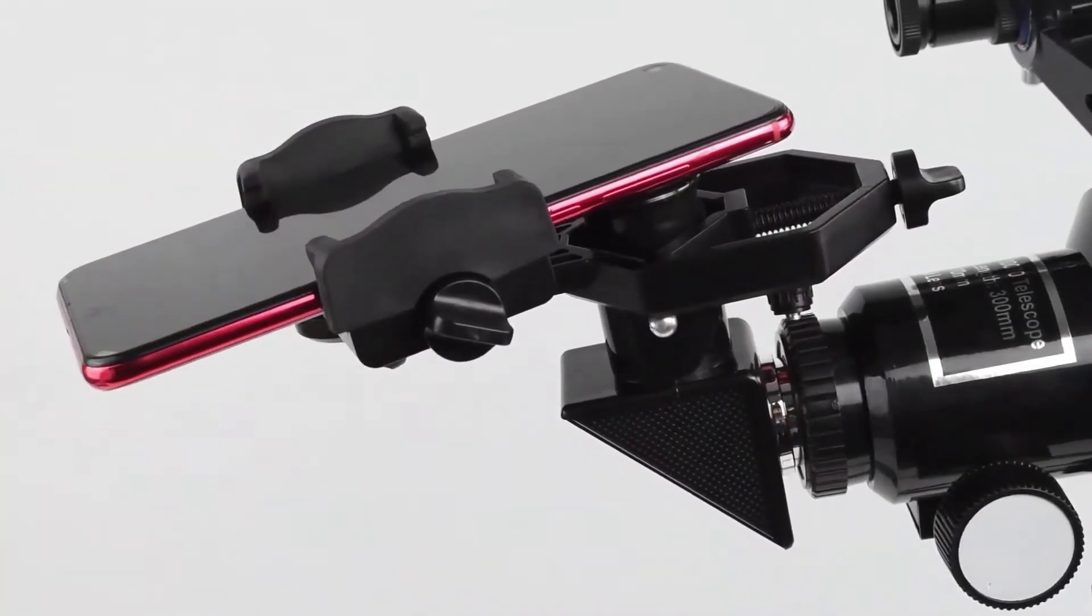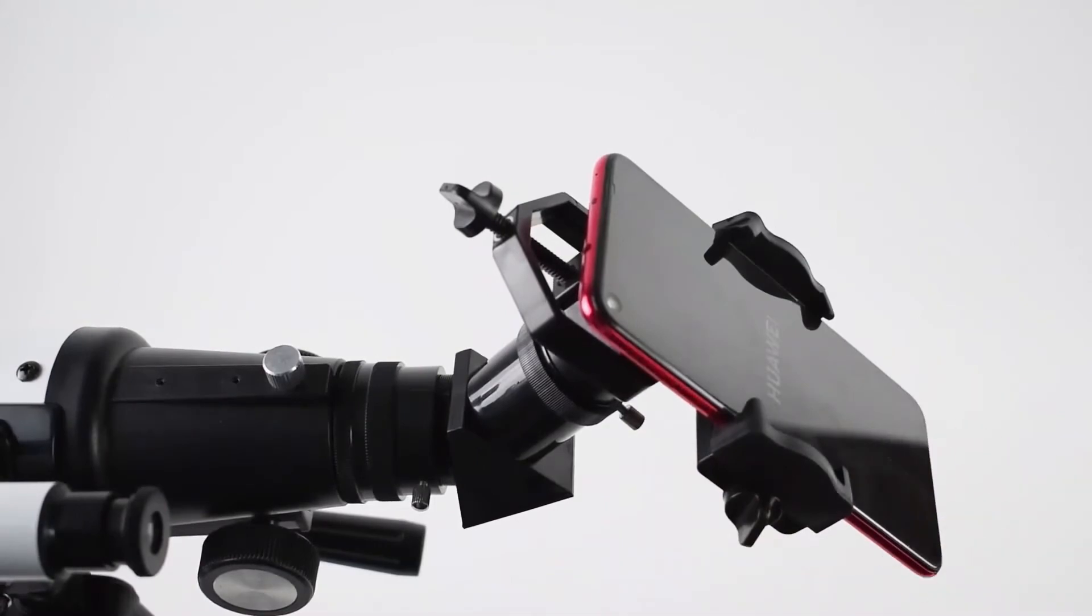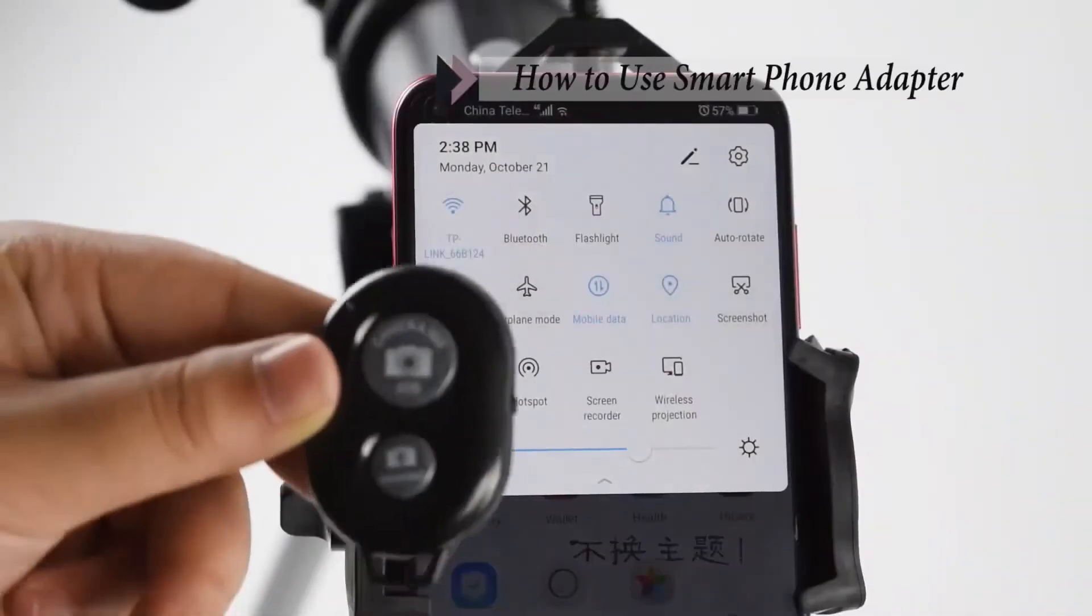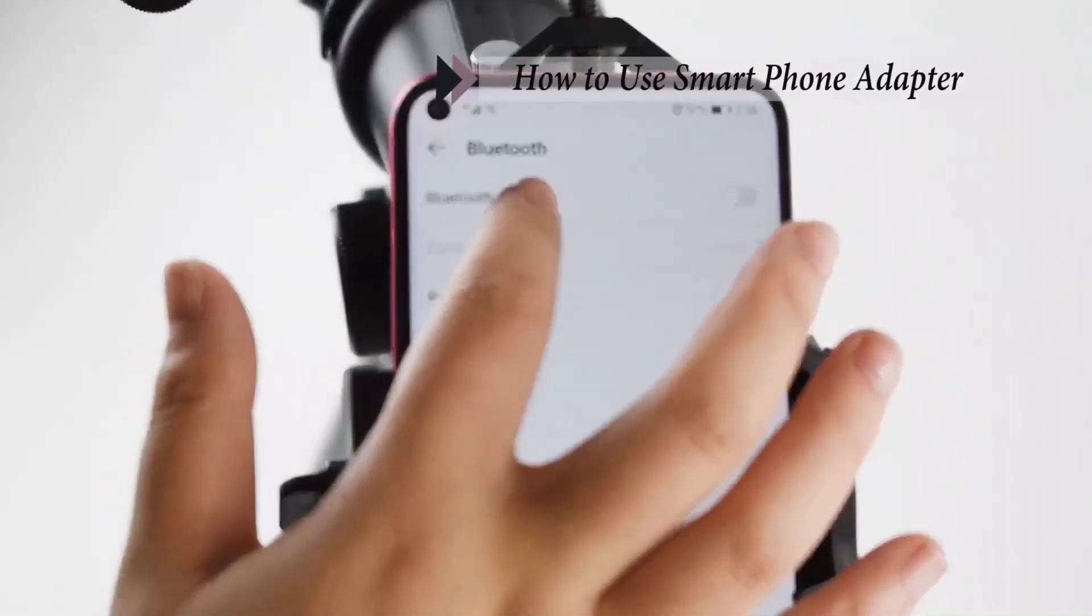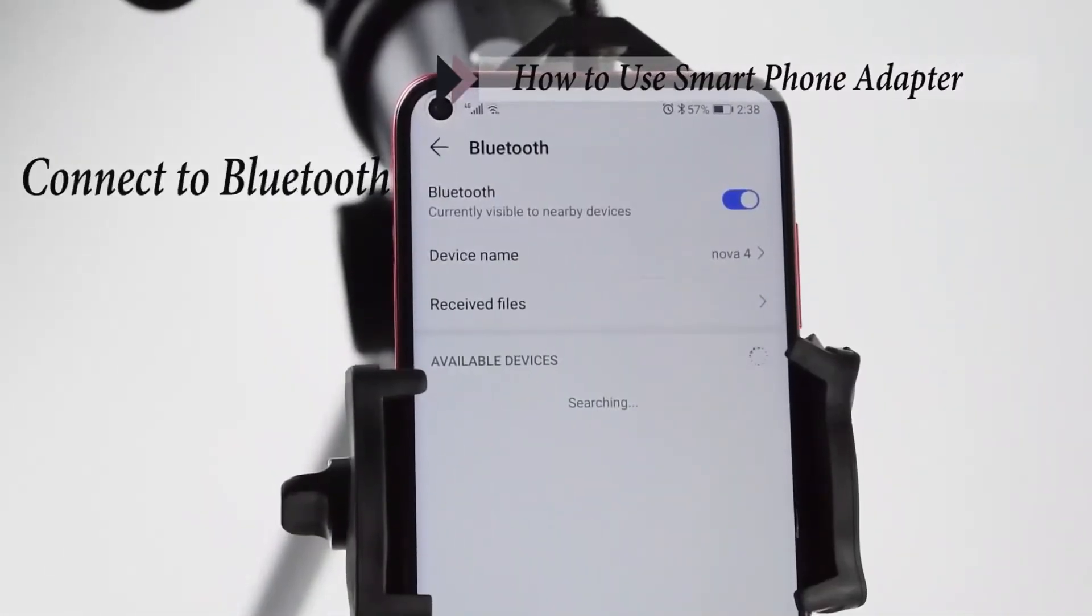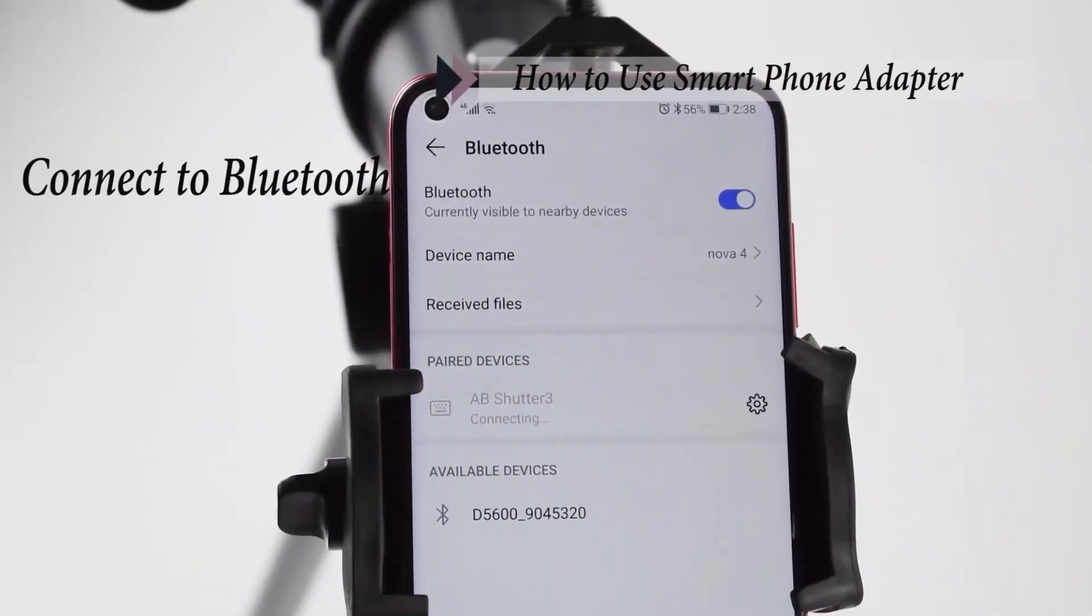Install the phone adapter on the eyepiece, with the phone lenses aimed at the eyepiece. Turn on the Bluetooth button switch and find the Bluetooth named AbShutter 3 in the phone. Press the camera button to take a photo.